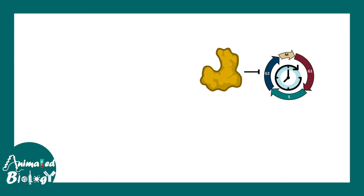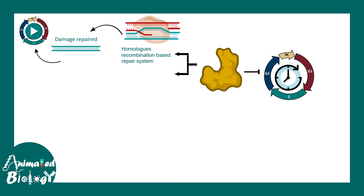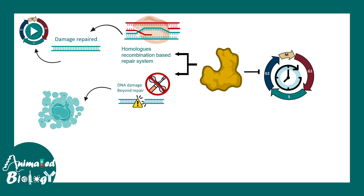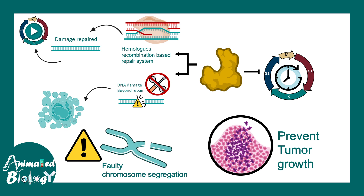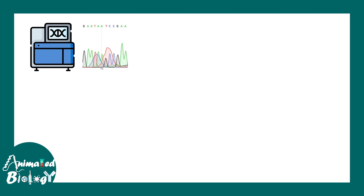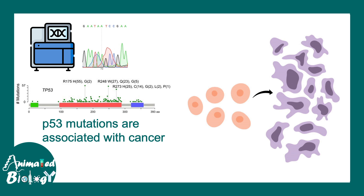In this video, we learned that there are two outcomes of p53-mediated cell cycle pause. One is fixing the damage with the help of recombination-based repair or NHEJ and resuming the cell cycle. If the damage is beyond repair, then apoptosis is triggered. All of this is necessary because it is better to have a dead cell than a cell carrying faulty chromosomes and mutations that might transform into a cancer cell. p53 mutations are therefore highly associated with most cancers, and genomic sequencing has found several mutation hotspots in the p53 gene associated with all types of cancers. That is why p53 is really important in the context of cell cycle regulation and cancer progression.